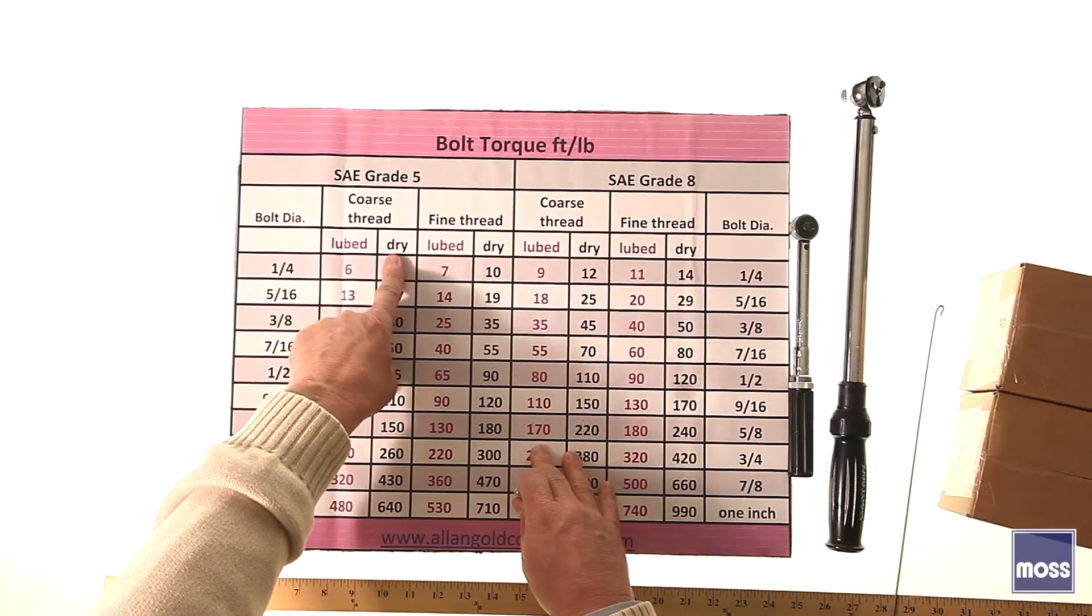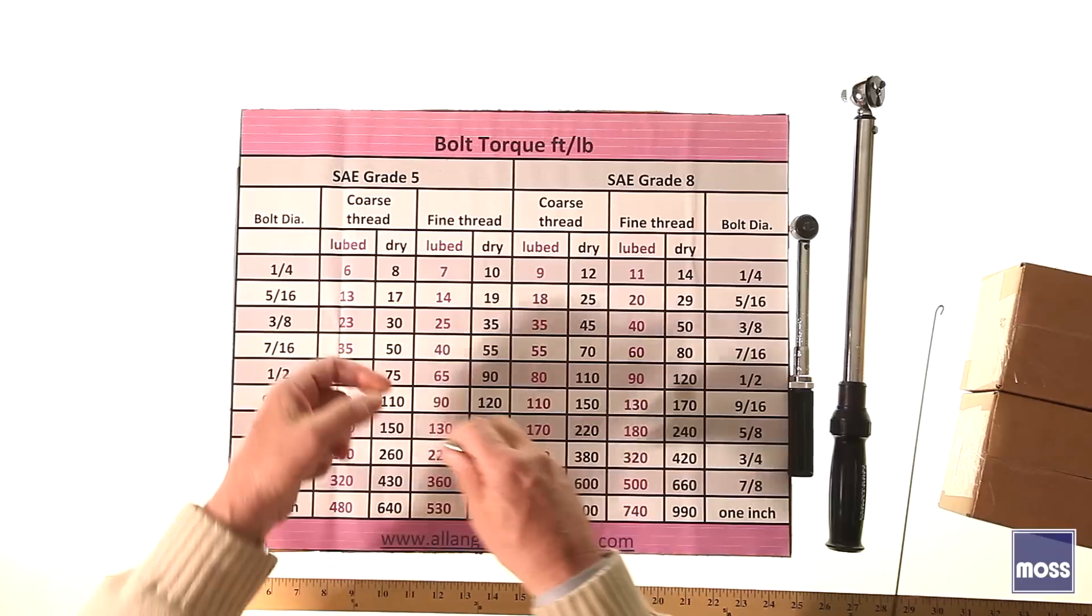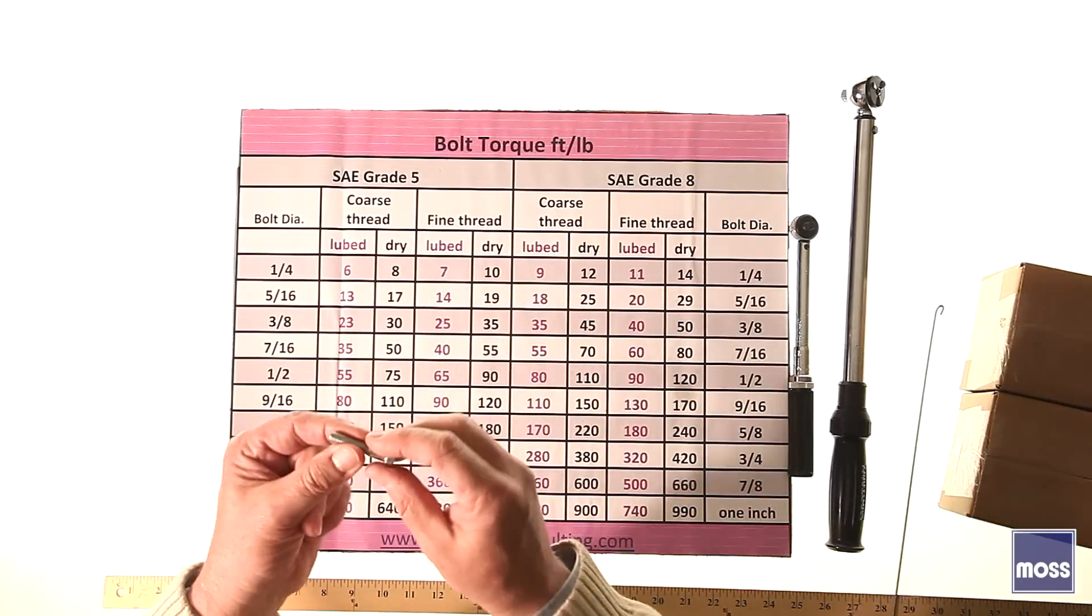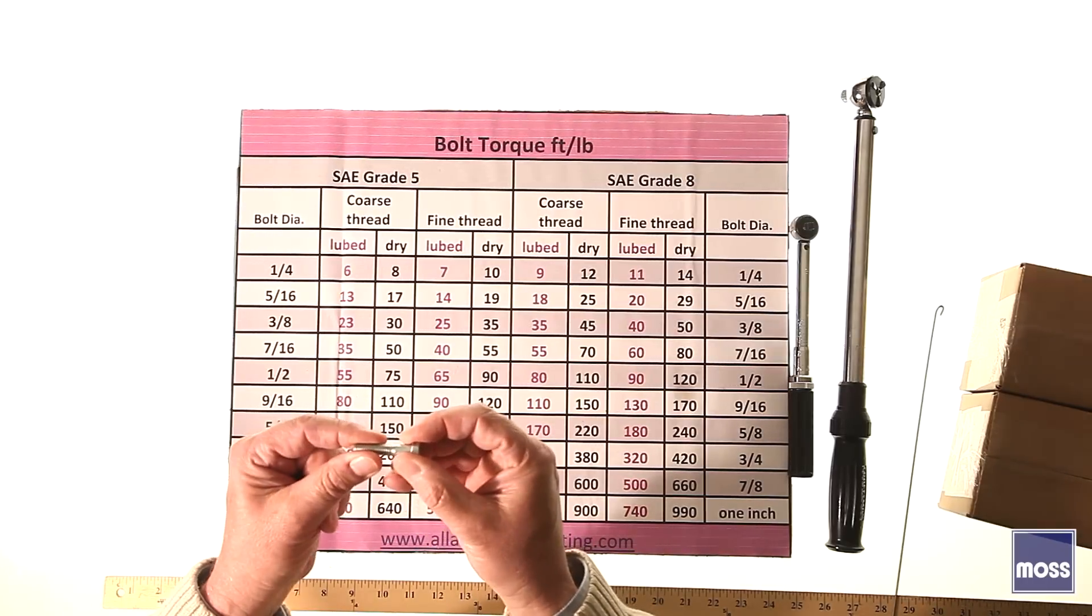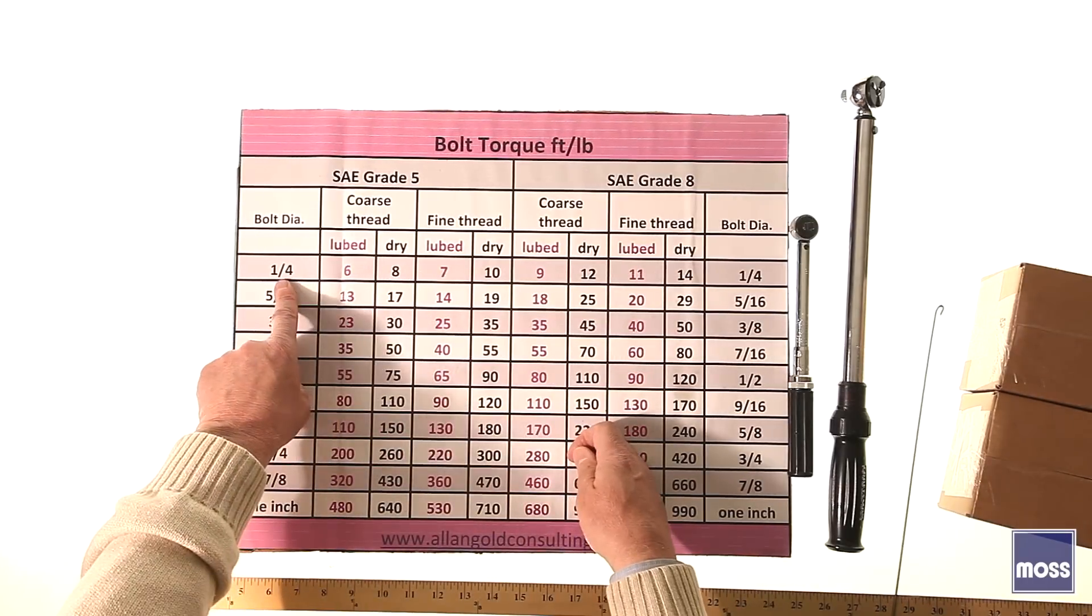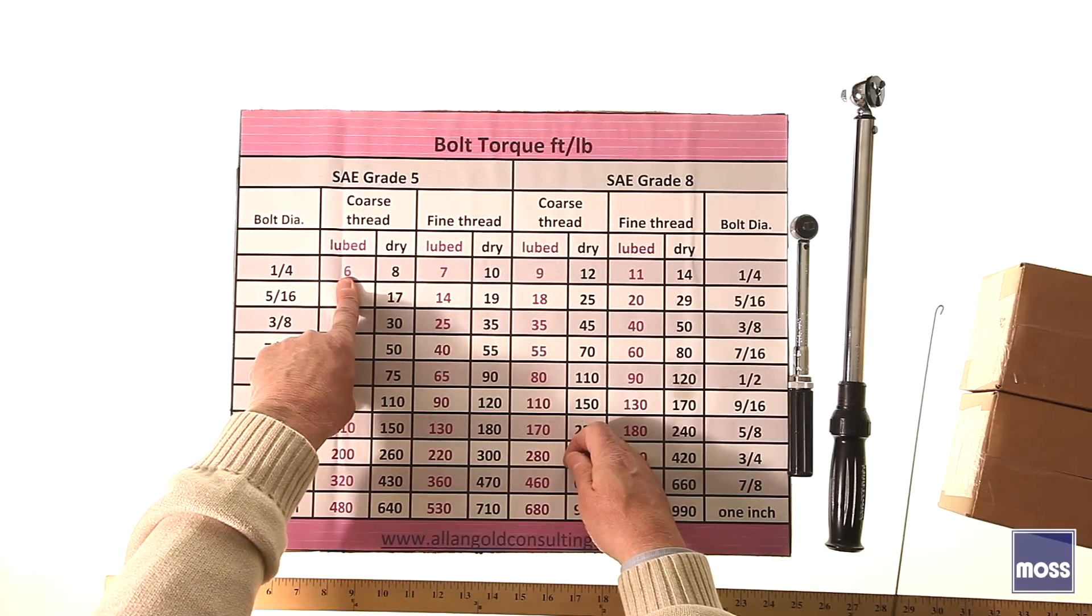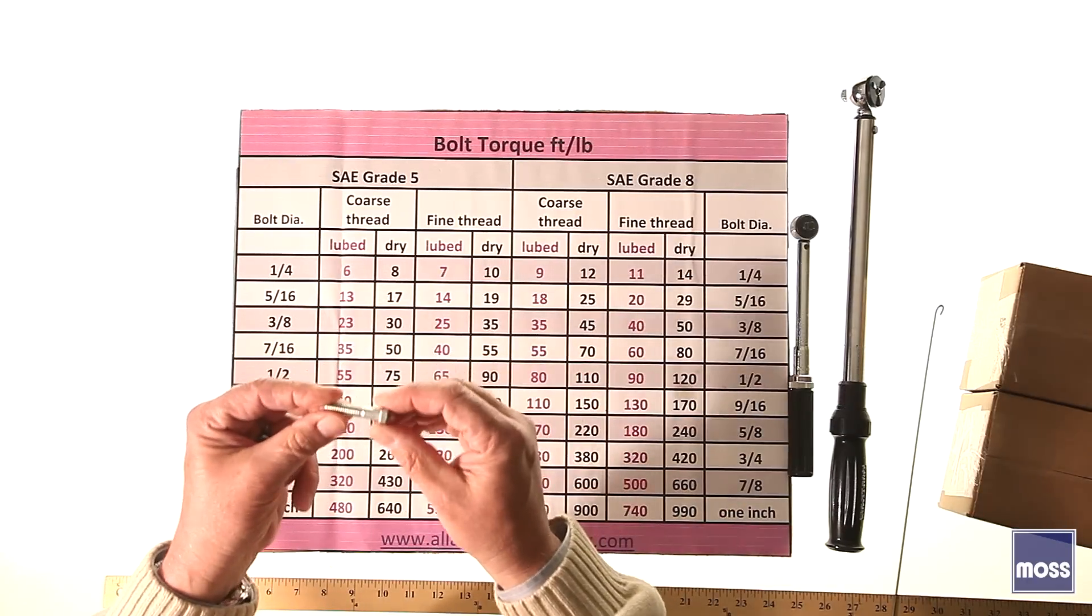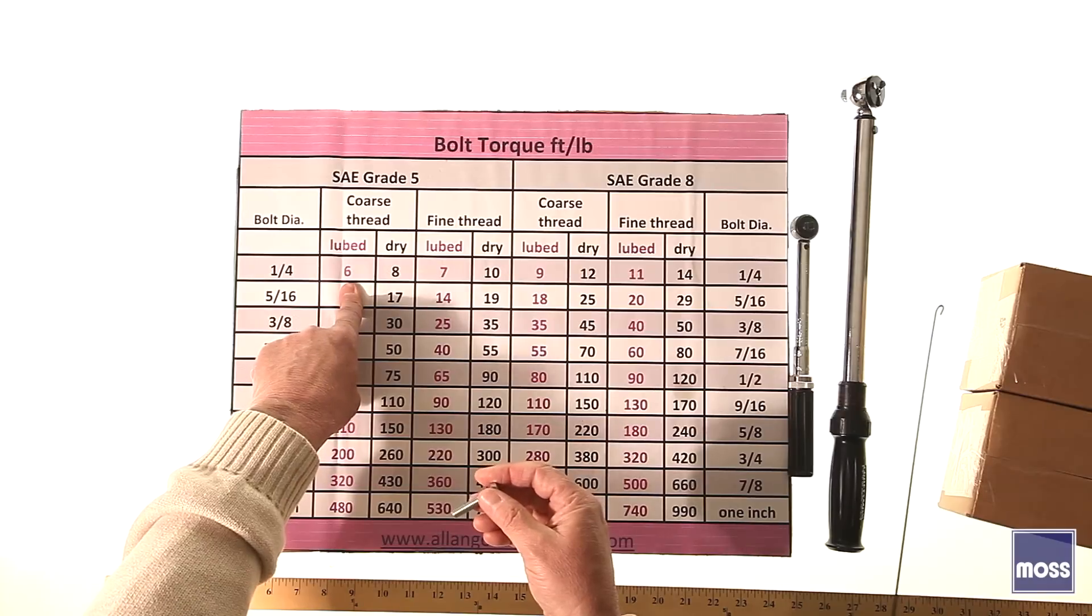The next thing is lubed or dry, and sometimes referred to in textbooks as wet or dry. If it's lubricated, what's going to happen to the friction? The friction is going to go down. It will take less stress or less torque to get this to stretch if it's lubricated. That's why this quarter-inch dry takes eight foot-pounds, but if it's got lubrication, it only takes six, 25% less. The amount of stretch on the bolt is going to be the same, but it takes less torque to do it simply because we've lubricated it.